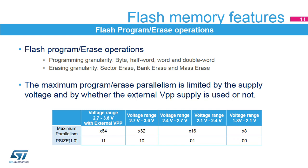The Flash Memory Interface implements program and erase operations. Programming granularity depends on the MCU supply range. Word parallelism is only available in the 2.7–3.6V range. Half-word parallelism is available from 2.1–2.7V, while byte programming is available across the full VDD range. To enhance programming parallelism, double-word programming is possible, but only from 2.7V with an external VPP applied during programming. Erase granularity can be down to sector size, and mass erase of the complete flash memory is also possible. Bank erase is only available on devices supporting dual bank mode.